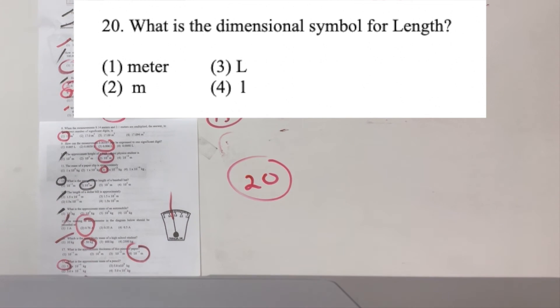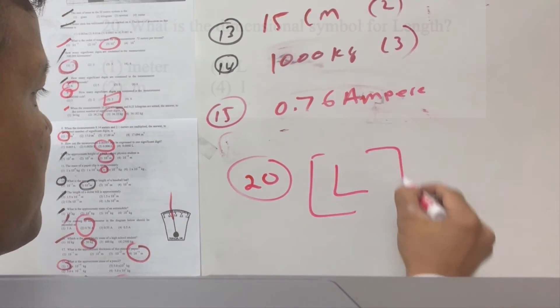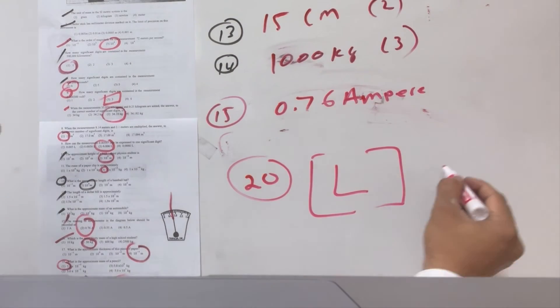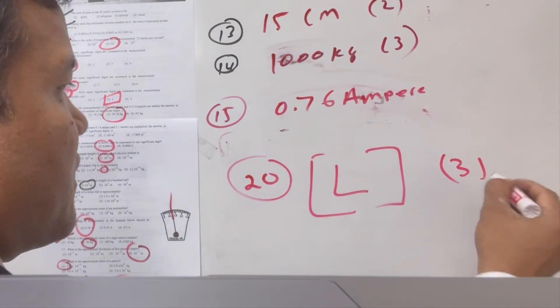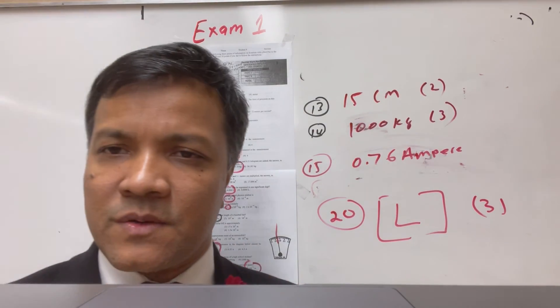Number twenty: what is the dimensional symbol for length? The dimensional symbol for length is L, and that is option number three. That was your test.